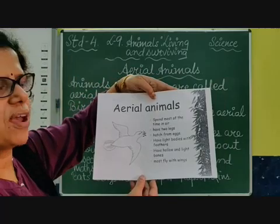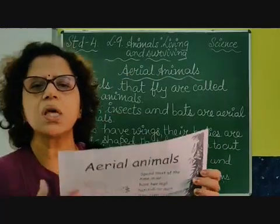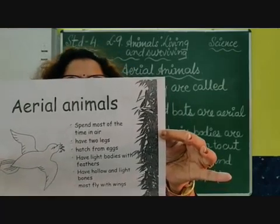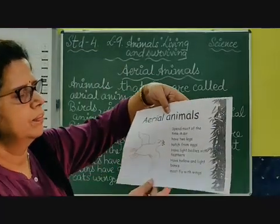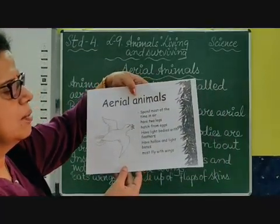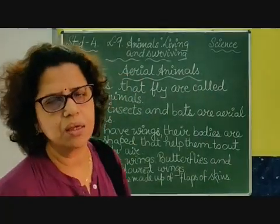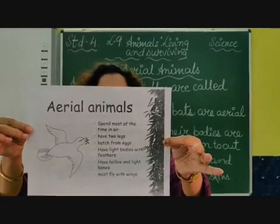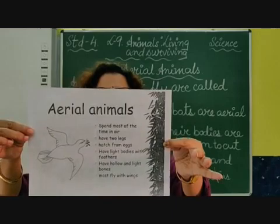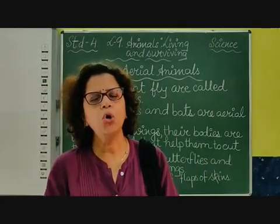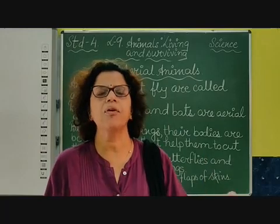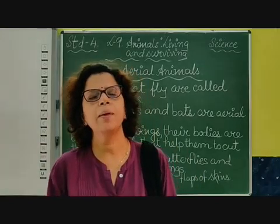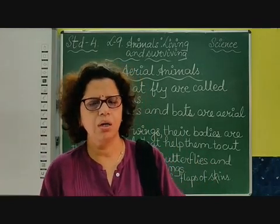Aerial animals have light bodies with feathers. As we discussed, their bones are hollow so that their bodies are light and they can fly in the air. They have hollow and light bones, and their bodies are actually boat-shaped, which helps them to cut through the air and move forward.